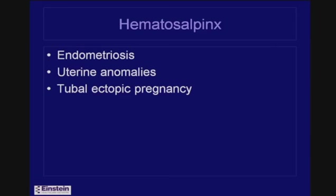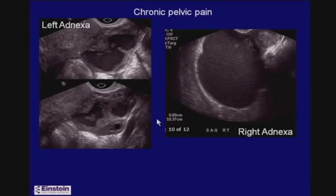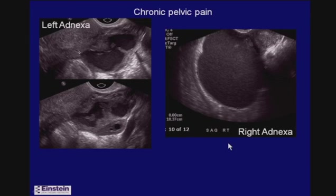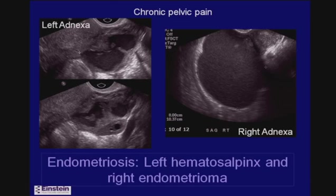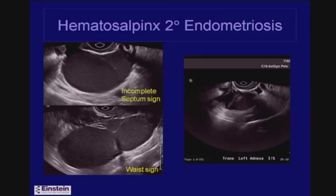Now let's turn to other causes of a dilated fallopian tube — hematosalpinx, or blood in the fallopian tube. Causes include endometriosis, uterine anomalies, and tubal ectopic pregnancies. Here's a patient with chronic pelvic pain, no fever, no leukocytosis — a dilated fallopian tube with an incomplete waist sign filled with homogeneous low-level echoes, and a separate ovary. On the right was a single round structure with the same fine low-level echoes and more solid debris in a corner — a classic finding of endometriosis with a left hematosalpinx and a right endometrioma.